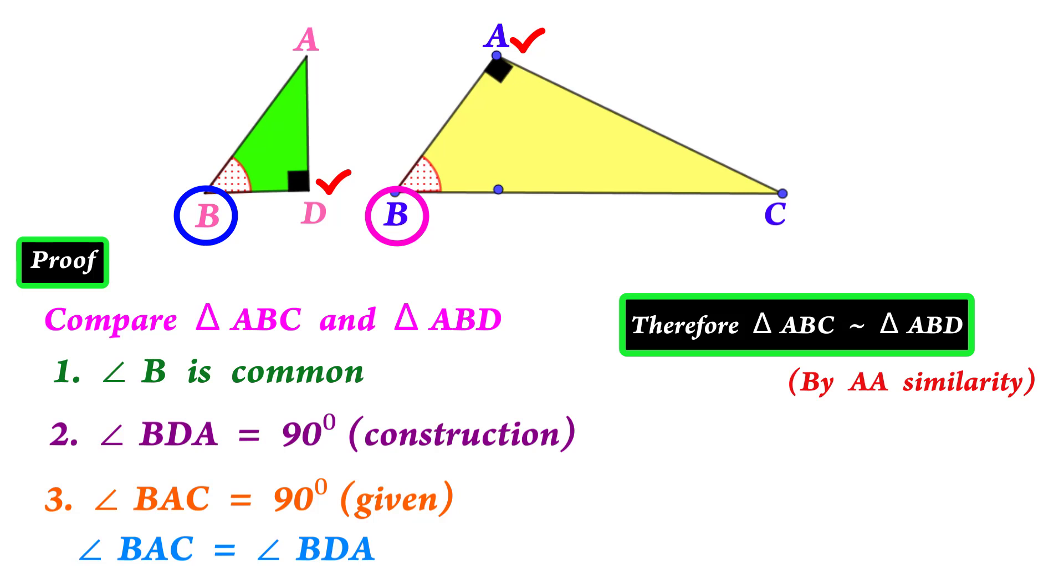Now we are going to write the corresponding sides. That's a short trick. Look at the two triangles. What side is common? B. Let's write the corresponding sides using this common side.